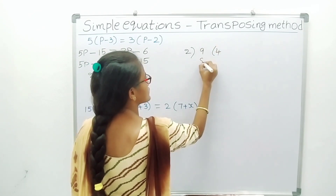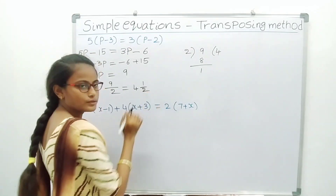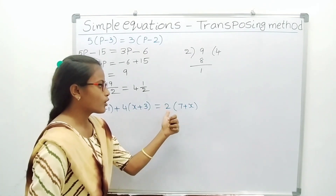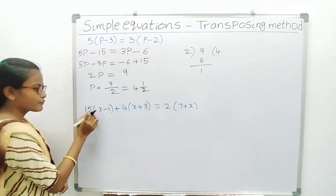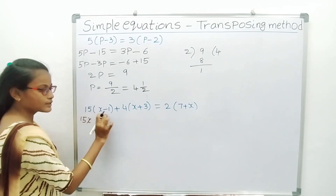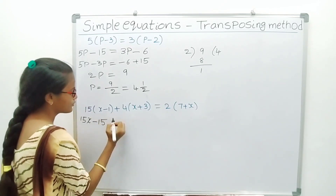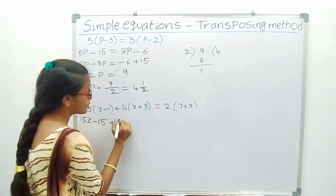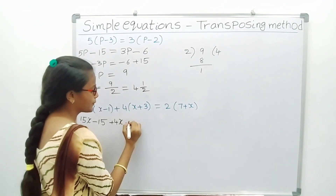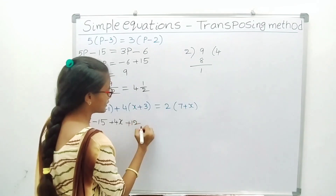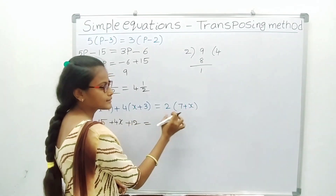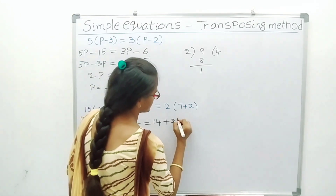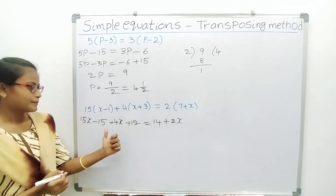2 into 4 is 8, remainder 1, so 4 and 1 by 2. Okay. Next problem: 15 of (x minus 1) plus 4 of (x plus 3) is equal to 2 of (7 plus x). Here 15 into x is 15x, plus into minus gives minus 15 into 1 which is 15. Plus 4 of (x plus 3): 4 into x is 4x. Is equal to 2 of (7 plus x): 2 into 7 is 14, plus 2 into x is 2x.